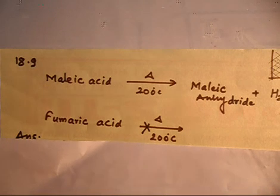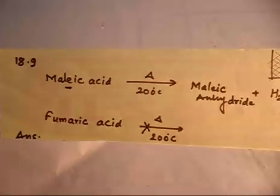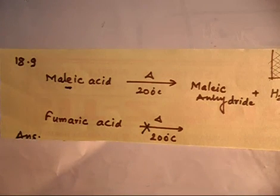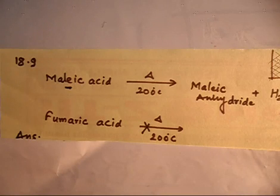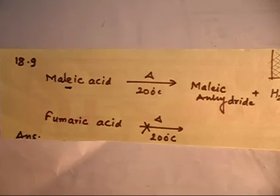And this is a maleic acid, so this means it also contains a double bond. So this contains a double bond with 2 COOH groups. And maleic acid, if you remember, also contains 2 COOH in the middle. So basically you have a total of 4 COOH. Maleic acid contains 4 COOH groups, 2 OH groups, 1 COOH group, and 1 double bond.